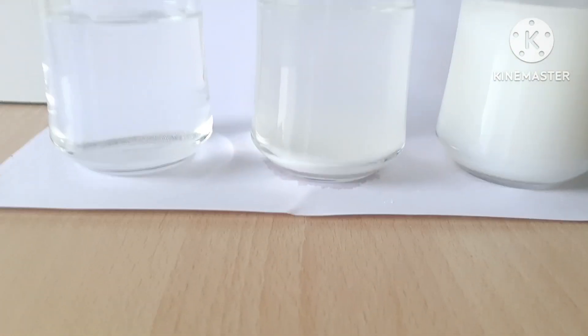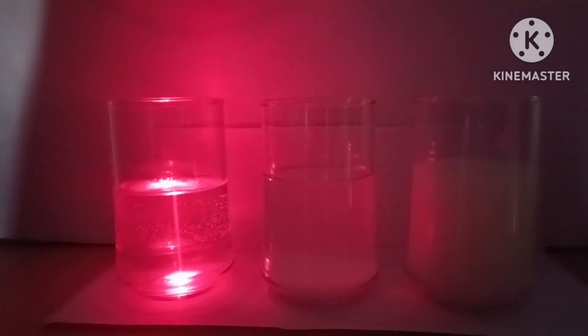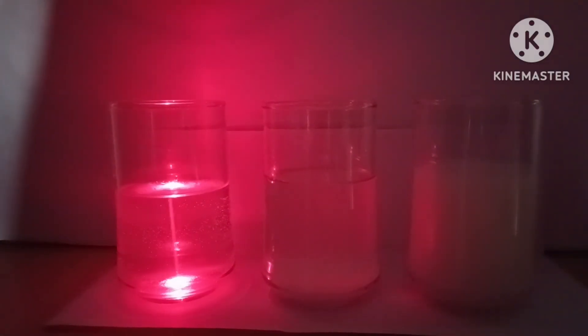Now, darken the room for better visibility. Shine the laser light through each glass tumbler and observe the path of the light beam.